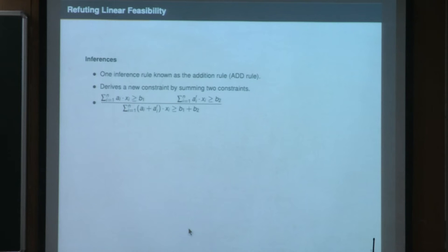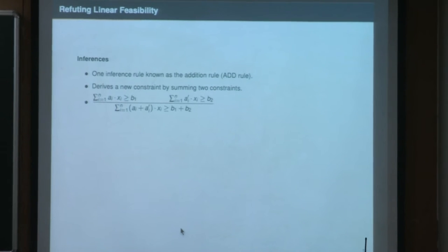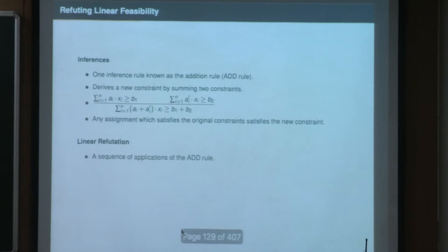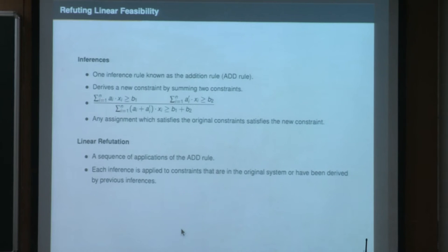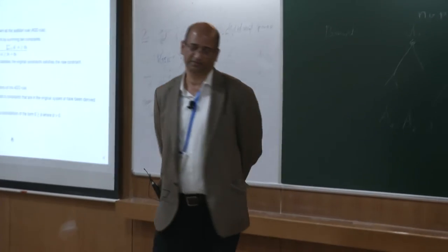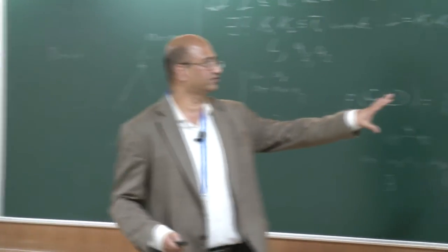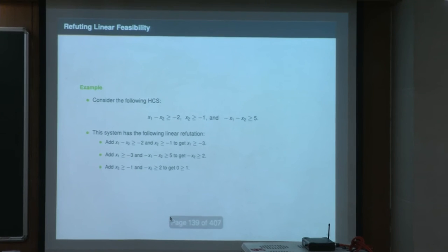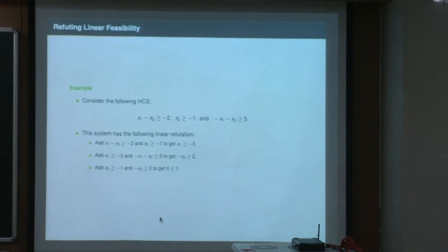To refute linear feasibility, we introduce the add rule: it derives a new constraint by summing two constraints. Given two relationships as premises, you can derive a new relationship. A linear refutation applies the add rule repeatedly, either to original constraints or to previously derived constraints, with the last inference producing a contradiction. This is the add proof system for linear refutation.